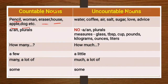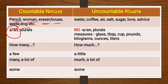For example, we would say 'I have a pencil,' 'there is a dog,' 'it's a house.' Remember this rule: we use articles A or AN with singular countable nouns, and we can make the plurals of countable nouns just by adding S or ES. Now let's talk about uncountable nouns.